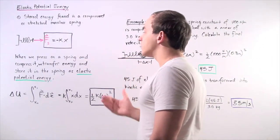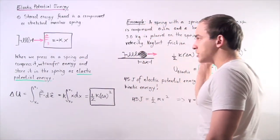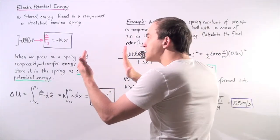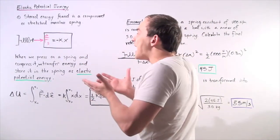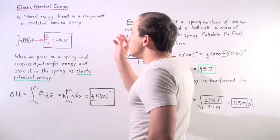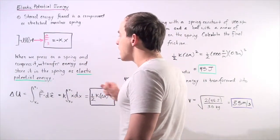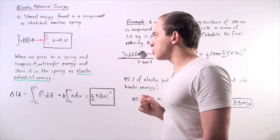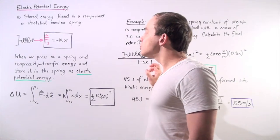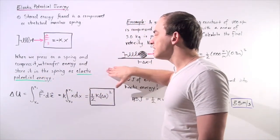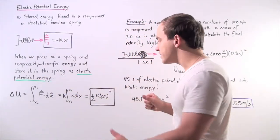And x is simply our displacement or compression distance. When I compress or stretch my spring, I'm storing energy in the form of elastic potential energy. When we press on a spring and compress it, we transfer energy from the hand and store it in the spring as elastic potential energy.